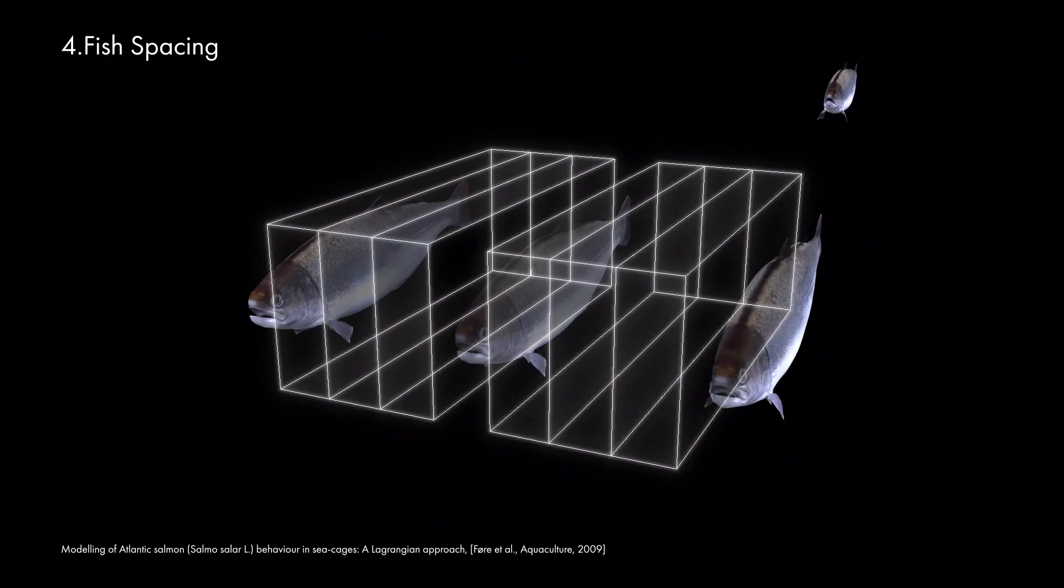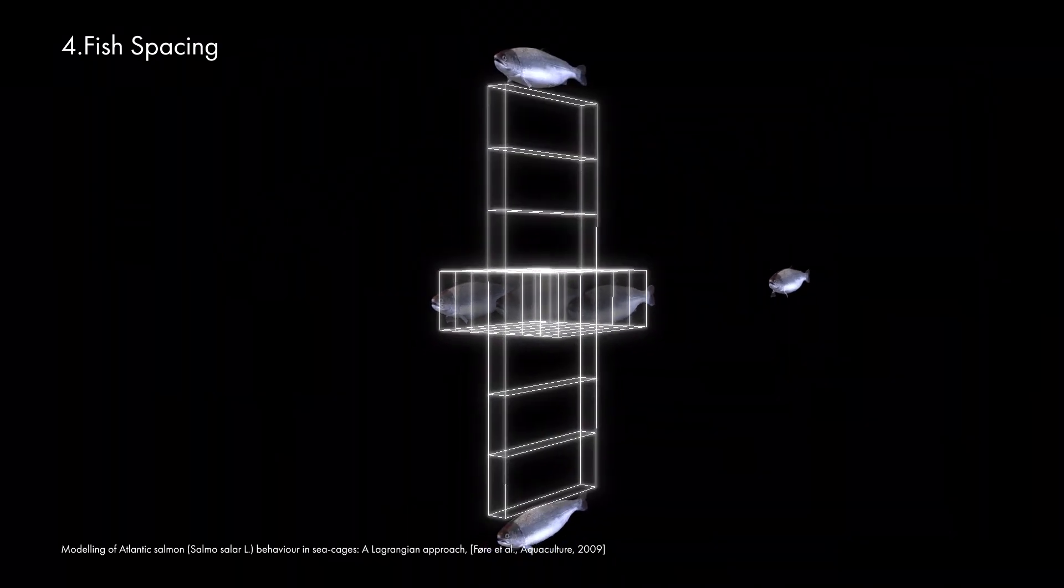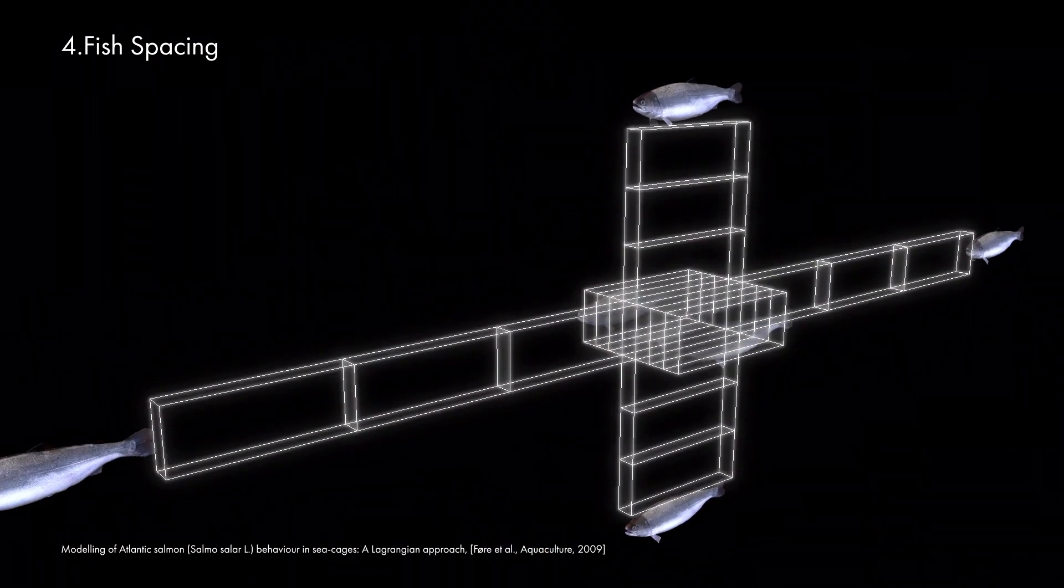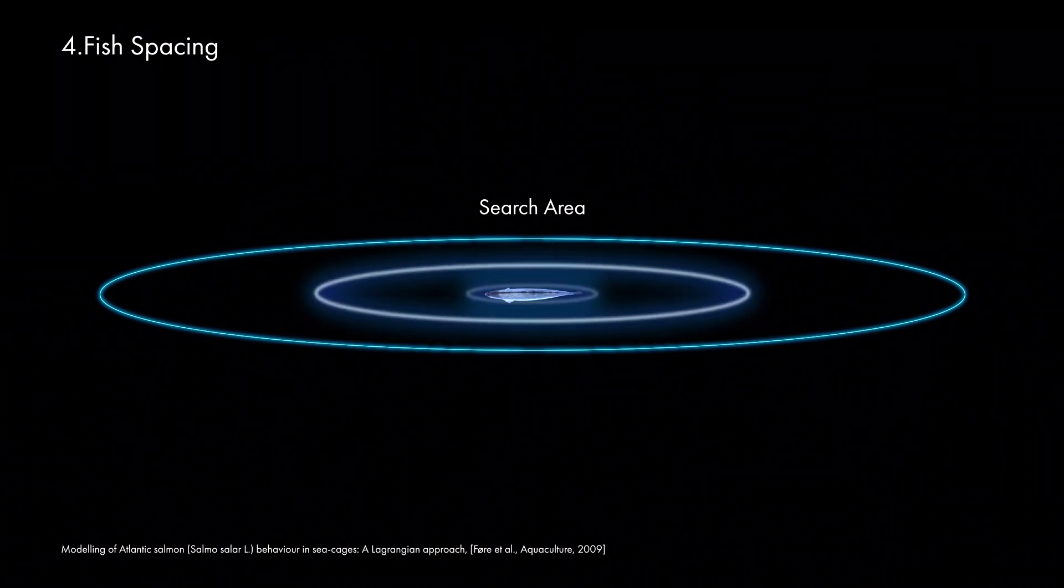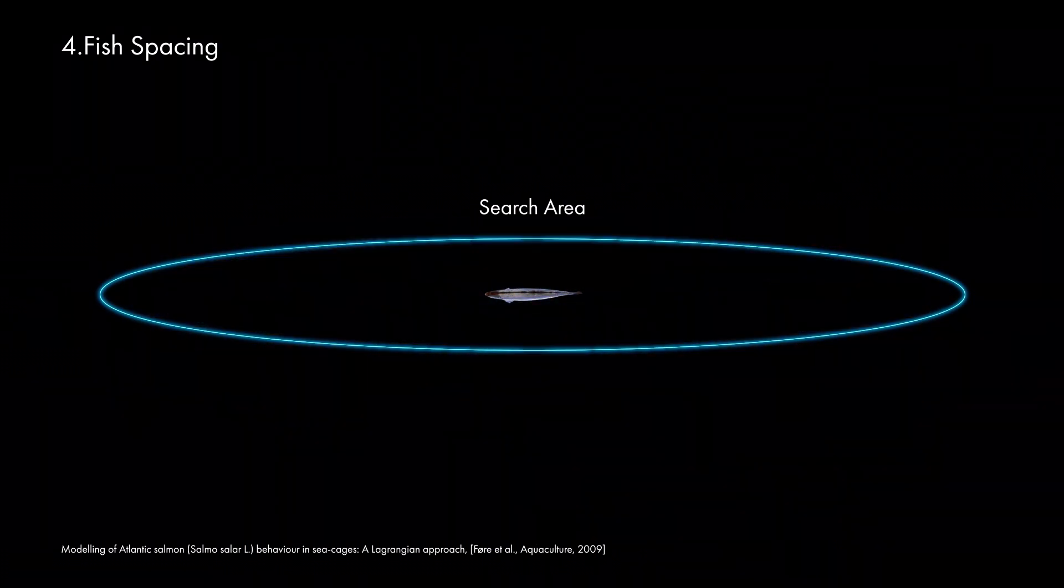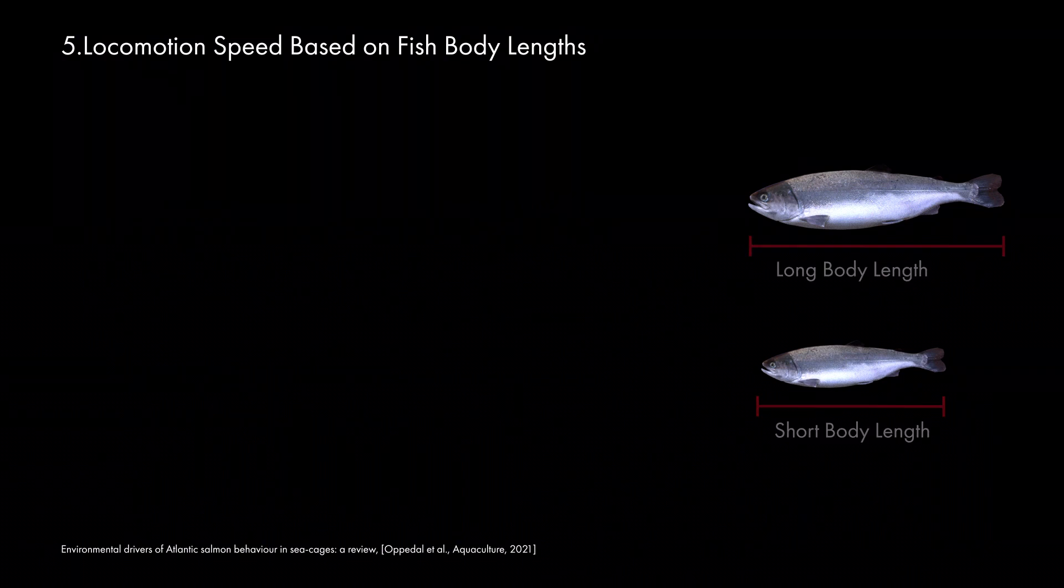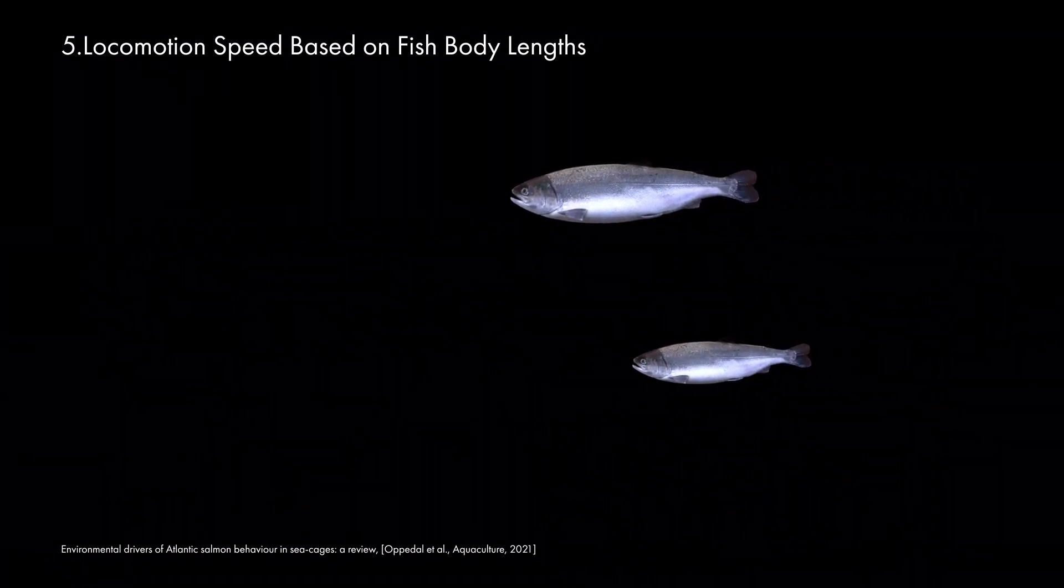Based on studies from the aquaculture literature, we set the sensing range of fish to three body lengths. Individual schooling behavior is affected by neighbors in this three body length radius. Based on a study by Oppendahl et al., swimming speed is determined by the body size of the fish.